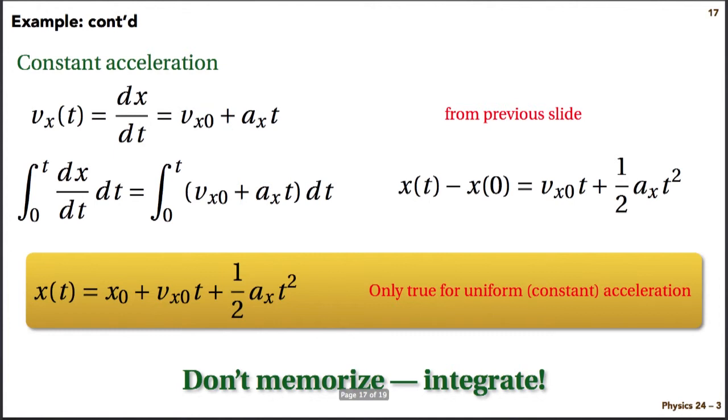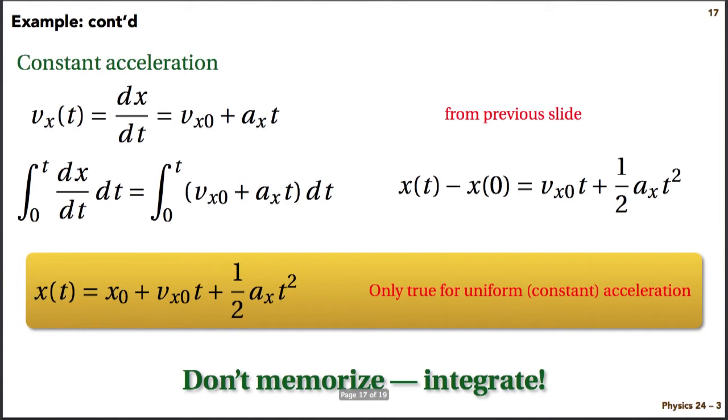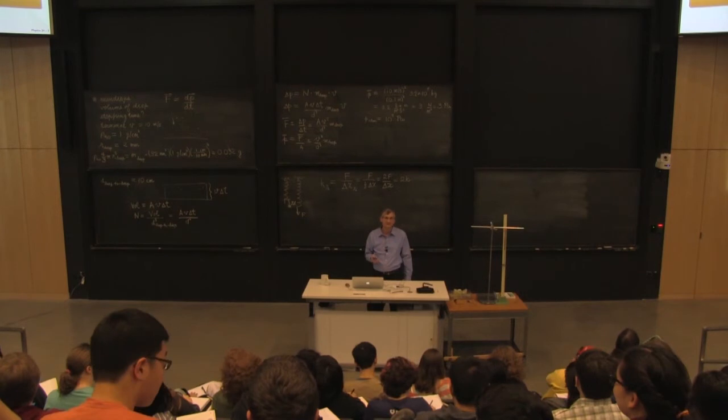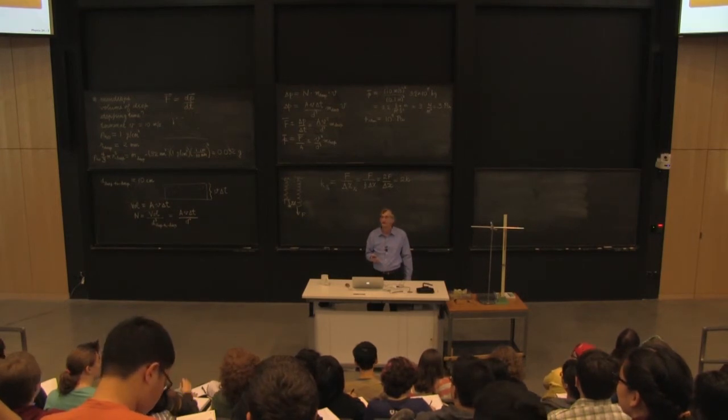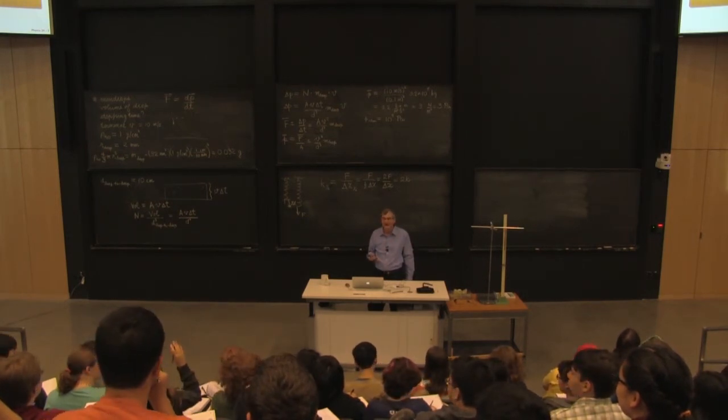change in x, so x at time t minus x at time 0. On the right is vx 0 t. And what is the value at 0? Well, I guess that's 0 because these two terms involve t. So at time 0, the contribution is 0. So if I now throw x 0 over to the right hand side, I get what is lovingly referred to as the kinematics equation for constant acceleration. How many of you have not seen this before? One. Okay.